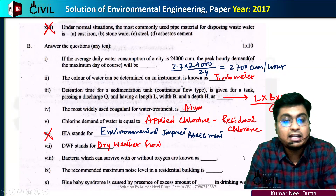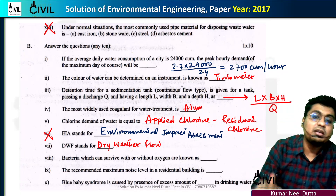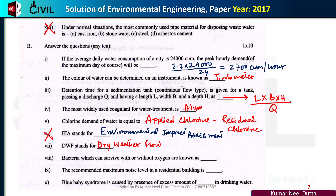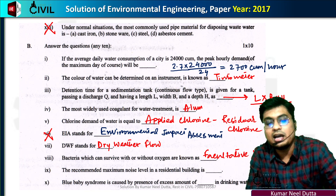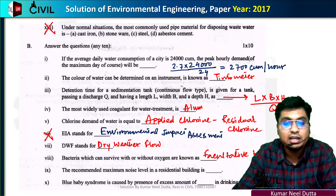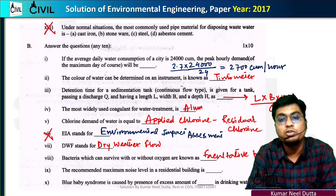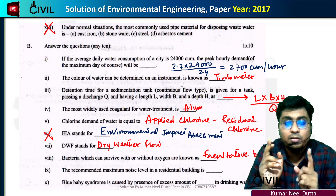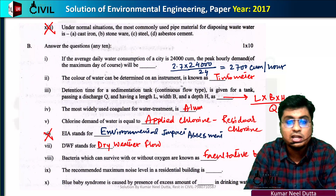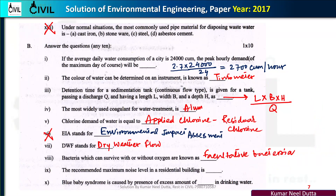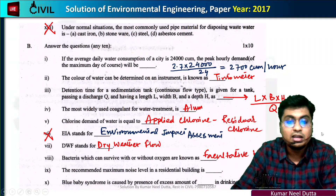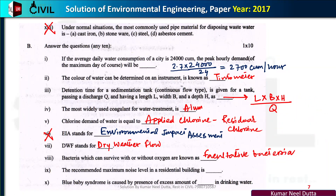Bacteria which can survive with or without oxygen are known as facultative bacteria. Bacteria that require oxygen are aerobic bacteria, and bacteria that survive without oxygen are anaerobic bacteria. The recommended noise level for residential buildings is 45 to 55 dB equivalent, which is expressed as Leq.